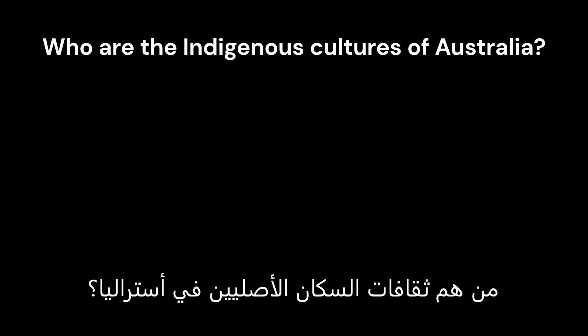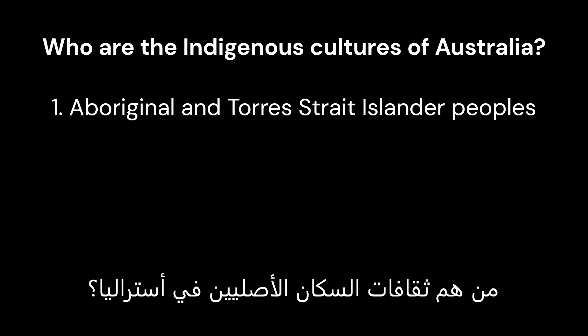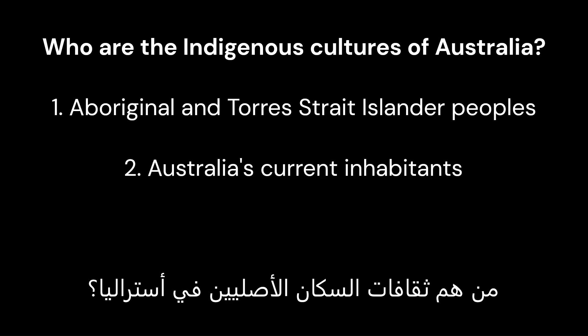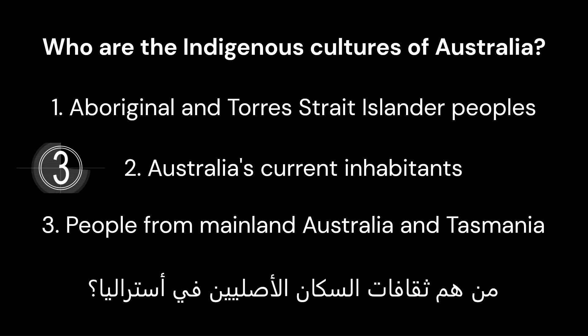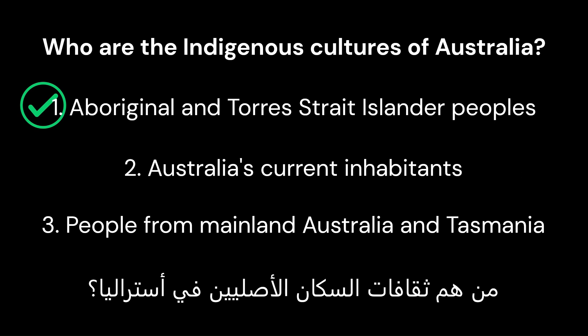Question 7: Who are the indigenous cultures of Australia? Option 1: Aboriginal and Torres Strait Islander peoples. Option 2: Australia's current inhabitants. Option 3: People from mainland Australia and Tasmania. Correct answer is 1: Aboriginal and Torres Strait Islander peoples.